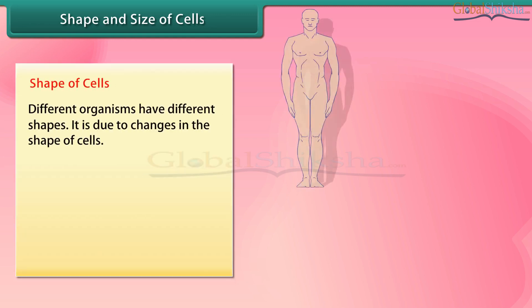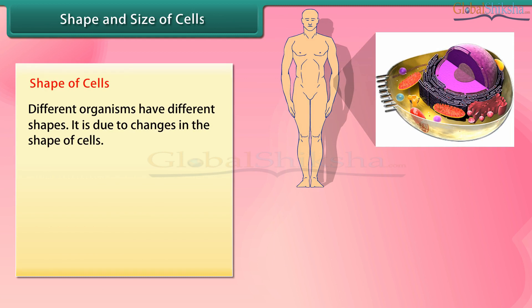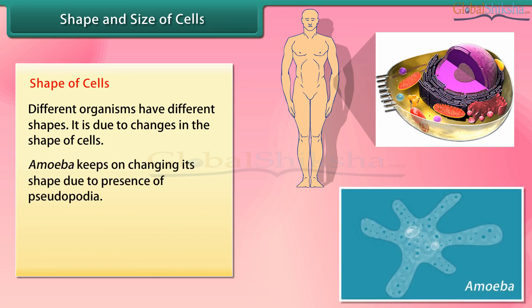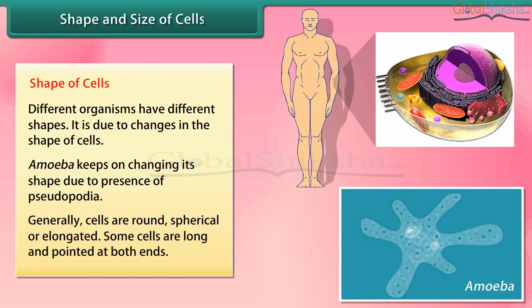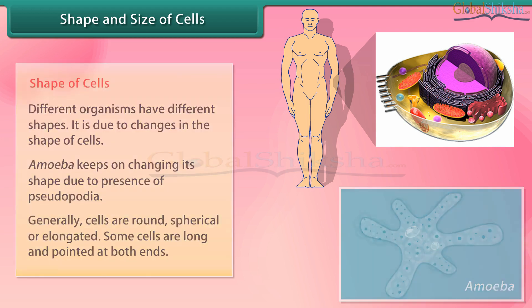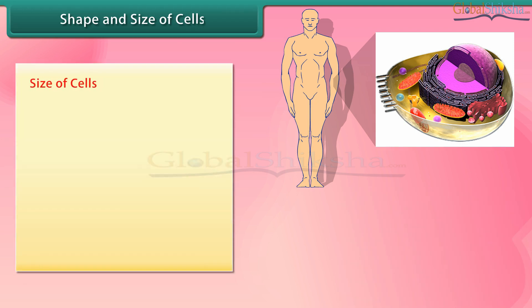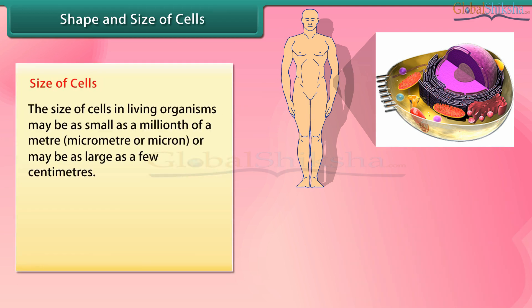Shape and size of cells. Different organisms have different shapes due to changes in the shape of their cells. Amoeba keeps on changing its shape due to the presence of pseudopodia. Generally, cells are round, spherical, or elongated. Some cells are long and pointed at both ends.